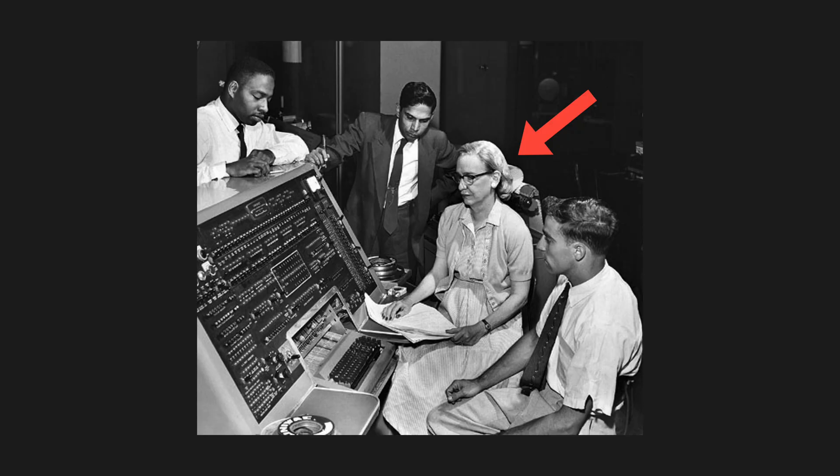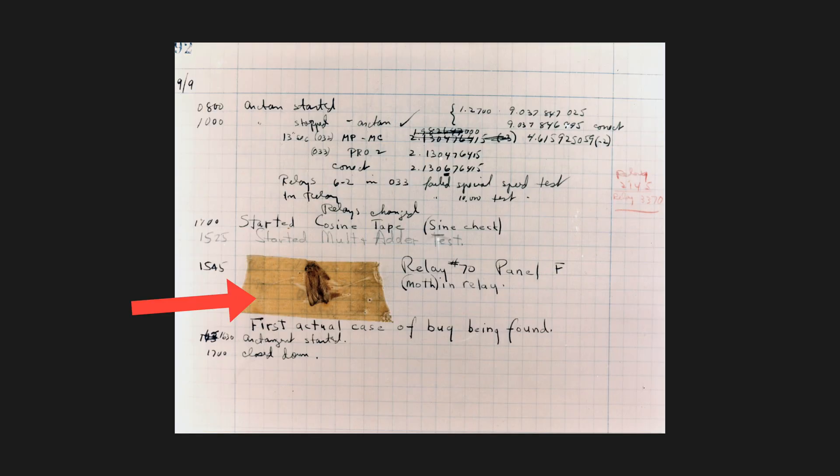Debugging 101 — first of all, what is it? It's the process of removing errors from your code. The term actually comes from programmer Grace Hopper, who in her day found an actual moth inside a physical computer. Some say that is the origin of the term 'bugs,' and obviously the process of removing bugs is called debugging.